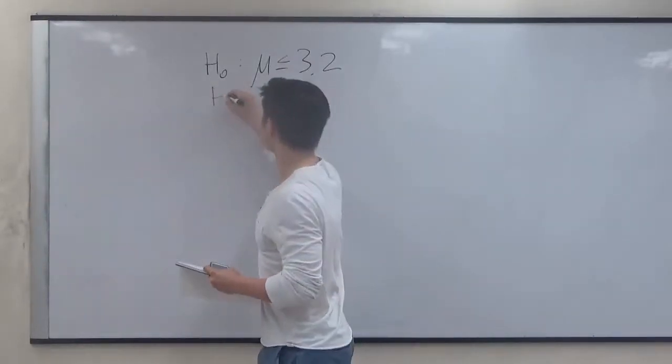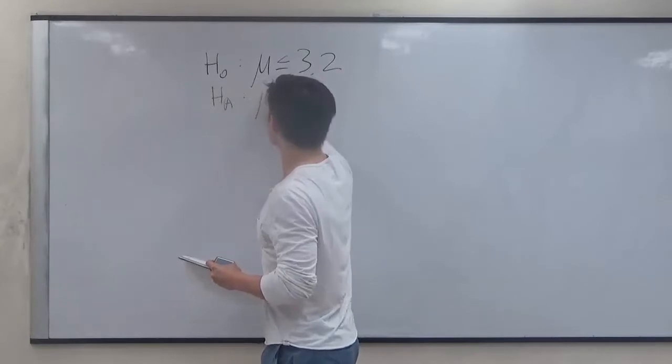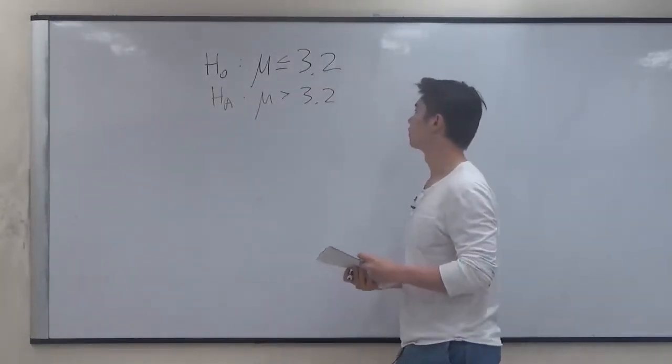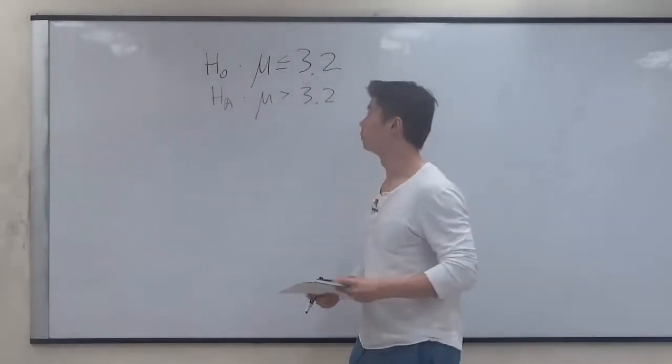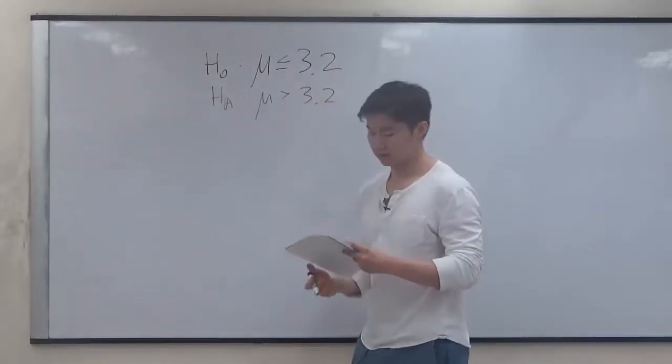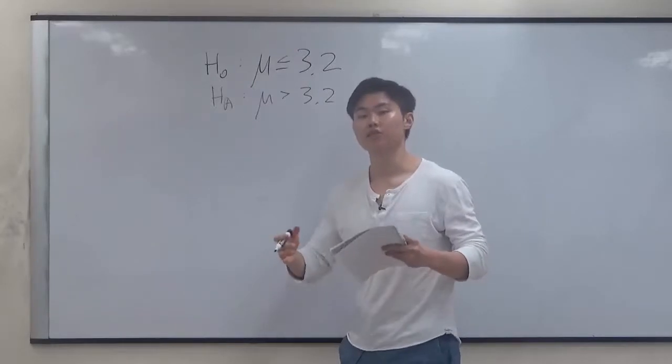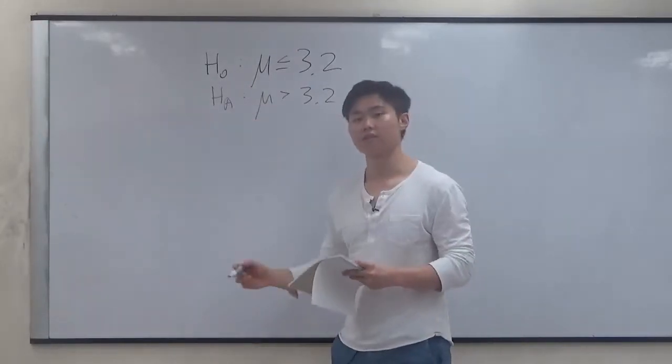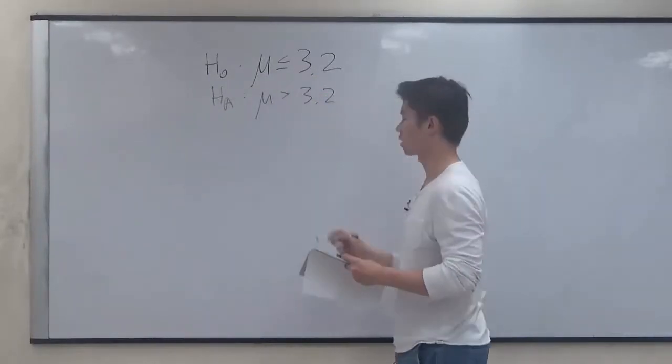So we can write HA: mu is greater than 3.2. Now you have to be careful about the wording of the problem. If the problem was worded as the company claiming that it is greater than or equal to, then the alternative hypothesis is less than. So watch the equal sign here.